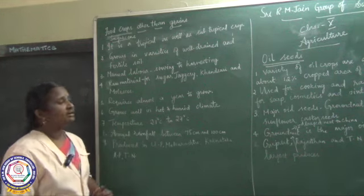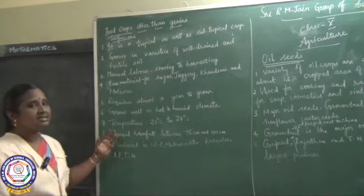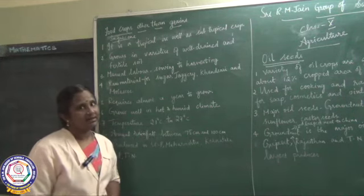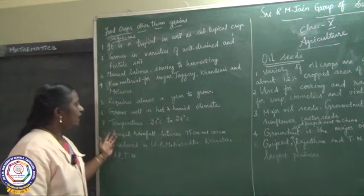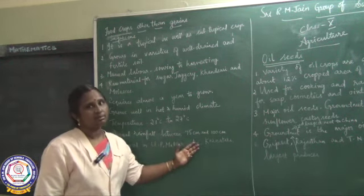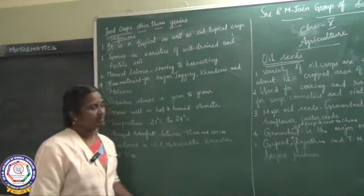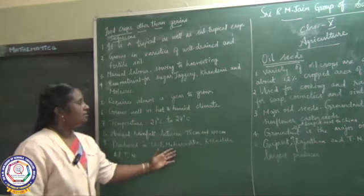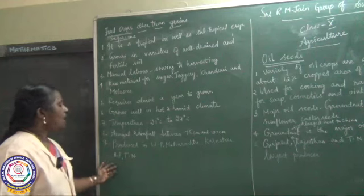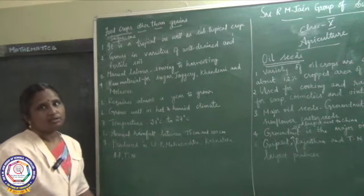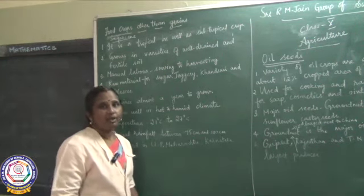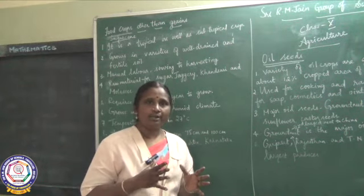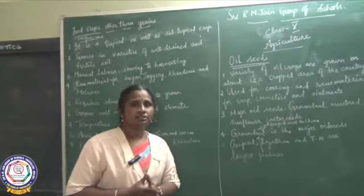Sugar cane grows well in hot and humid climate and needs a temperature of about 21 to 27 degrees Celsius. It needs an annual rainfall between 75 cm and 100 cm. It is produced mainly in Uttar Pradesh, Maharashtra, Karnataka, Andhra Pradesh, and Tamil Nadu. Sugar cane is manual-labor oriented and takes almost a year to grow.